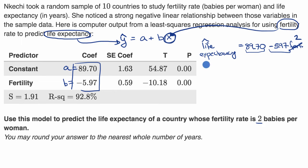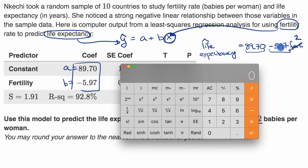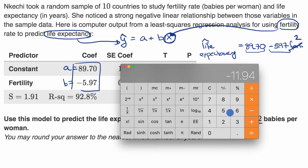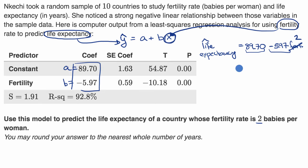Let's get out a calculator. 5.97 times two equals 11.94, and then we subtract that from 89.7, which gives us approximately 77.76. Rounding to the nearest whole number of years, that's approximately 78 years.